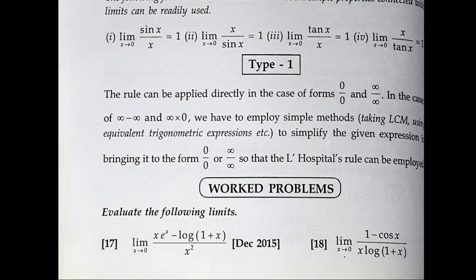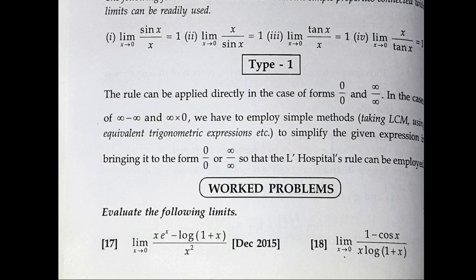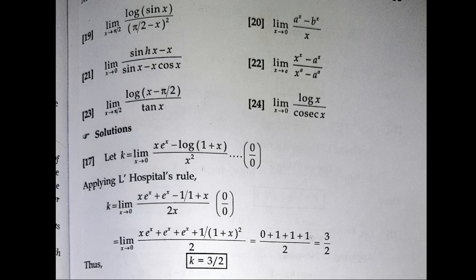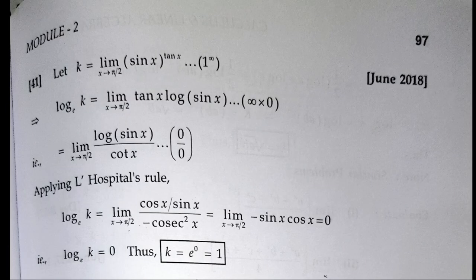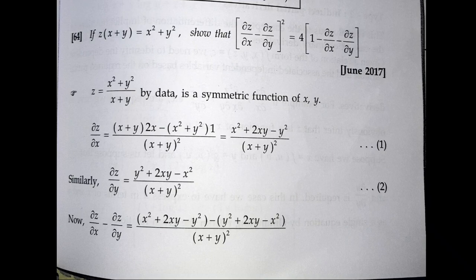The next topic is limits. Limits are made of 4 different properties. For example, the limit of x approaching 0 of sin(x)/x equals 1. This is the same standard result — it may be 1 or 2 marks. Limit questions have 2 steps, and you can solve them by selecting the same standard results.